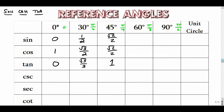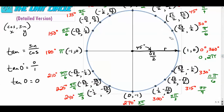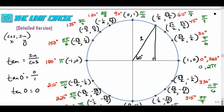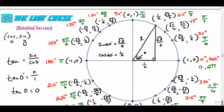Moving to 60 degrees: in this 30-60-90 triangle, with 60° in the corner and a hypotenuse of 1, the shorter leg is one half and the longer leg is radical 3 over 2. So the sine of 60° is radical 3 over 2 — opposite over hypotenuse — and the cosine of 60° is one half. The tangent is radical 3 over 2 divided by one half; the twos cancel, giving radical 3.